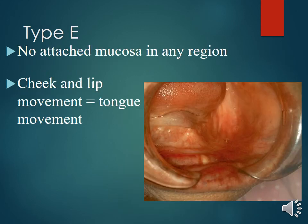Type E: no attached mucosa in any region, with cheek and lip movement affecting all areas.